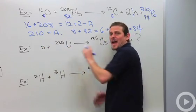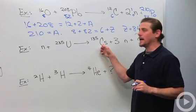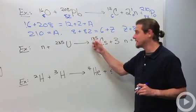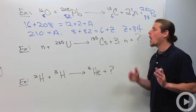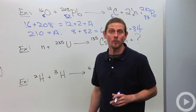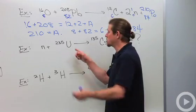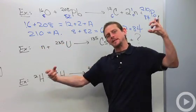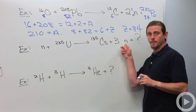The next one tells us that a neutron is going to come in and hit a uranium-235 nucleus, and then it's going to spin off a cesium-135 nucleus, three neutrons, and something else. This reaction is actually a very important reaction. It's called induced fission. The neutron comes in, hits this uranium nucleus, splits it in two and spits off a couple more neutrons.